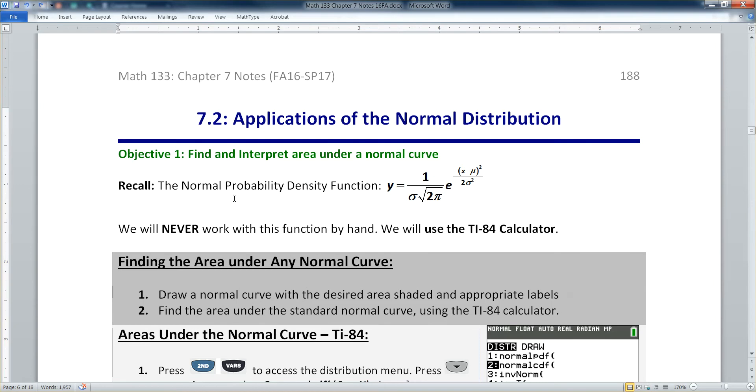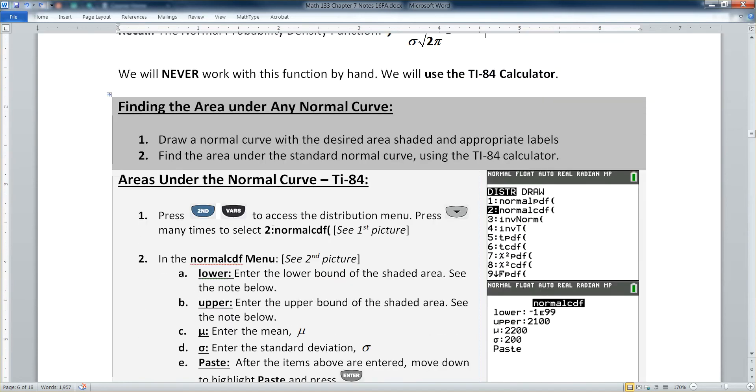Now, the normal curve has this as its function, believe it or not. So that is a very large, very complicated function. It's the probability density function for a normal curve. And it's extremely complicated. It's so complicated that no Calculus 1 instructor would do it. It's usually a Calculus 2 topic, and often then it's not even covered because it's tricky. But we, of course, are not going to do that by hand. No way. We're going to use a calculator. It will find the area under this normal curve for us.